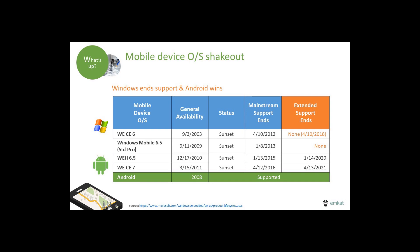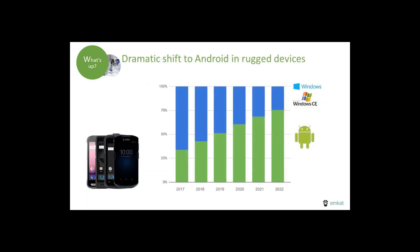Let's take a look at how the rugged market has embraced this change. The market has spoken — Android has been adopted. All major rugged manufacturers are effectively only releasing new devices on Android. Note that this graph shows what is physically out there versus what is being sold. We checked with our hardware partner Zebra, and they expect that 75% of devices sold in 2019 will be Android. Moving to Android is not a question of if, but when.